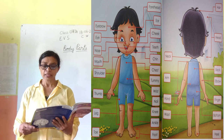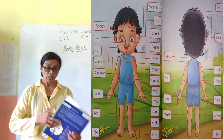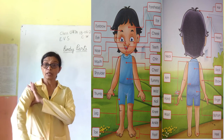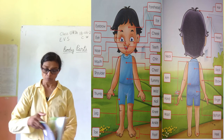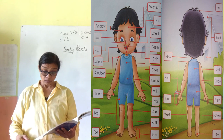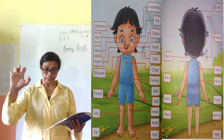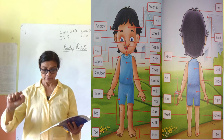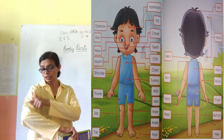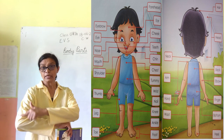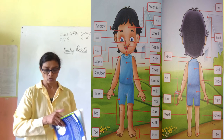And next, arm. This part is arm. Arm and fingers. And elbow. This part is elbow. L shape. This part is elbow.